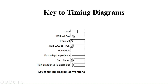The stable bus is represented by straight lines. Bus to high impedance means a single line going to high impedance. Bus change shows two buses — the signal changing from one bus to another, with a shaded undefined region during the transition. Finally, high impedance to stable bus means if the signal transitions from high impedance to a stable value, that is the high-impedance-to-stable-bus convention. These are all the timing diagram conventions.